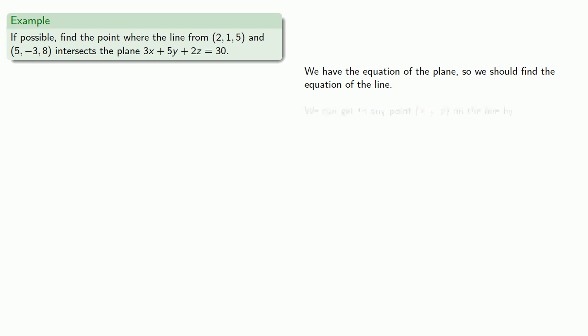We can get to any point (x, y, z) on the line by traveling from the origin to the point (2, 1, 5) on the line along the vector (2, 1, 5).